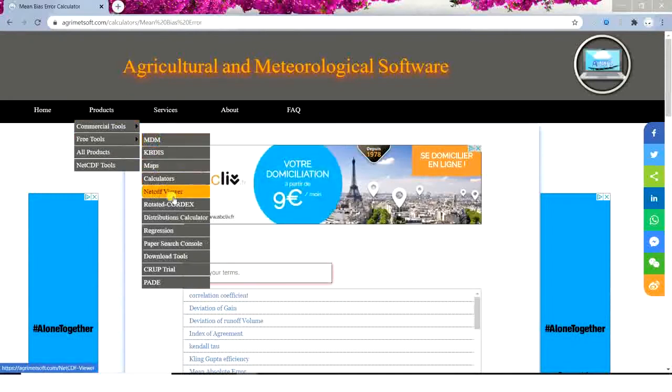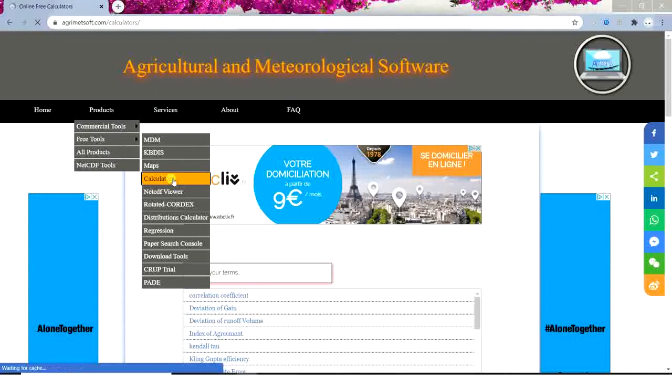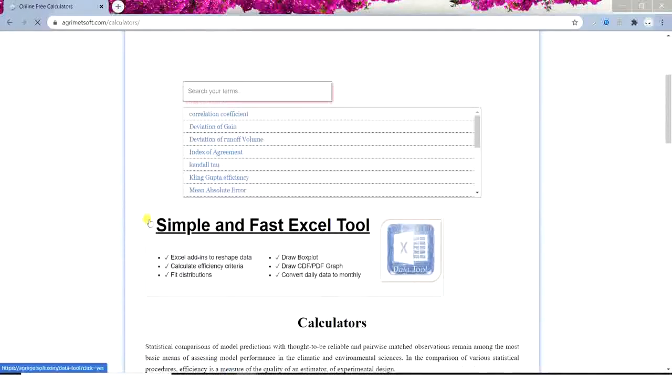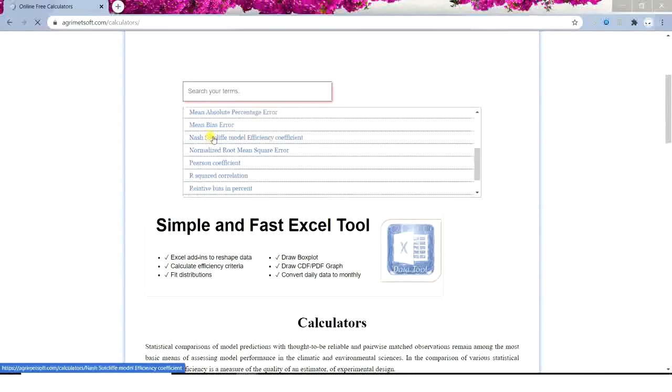...and then go through Calculators. Then you come up to this page. Here you want to choose Mean Bias Error.